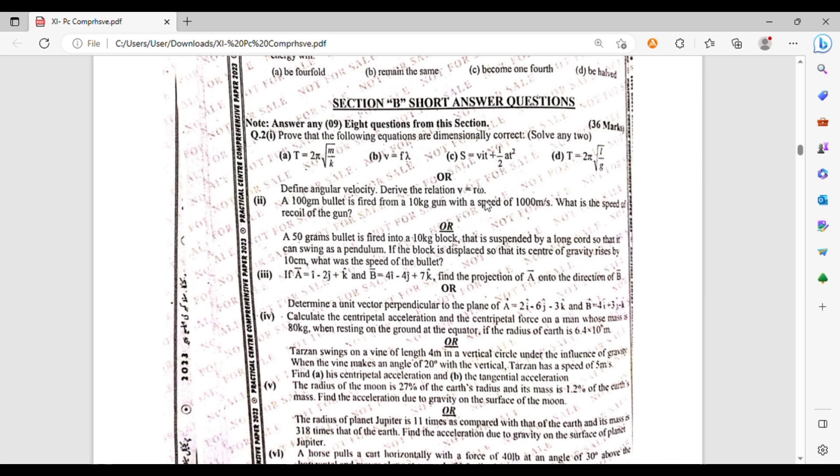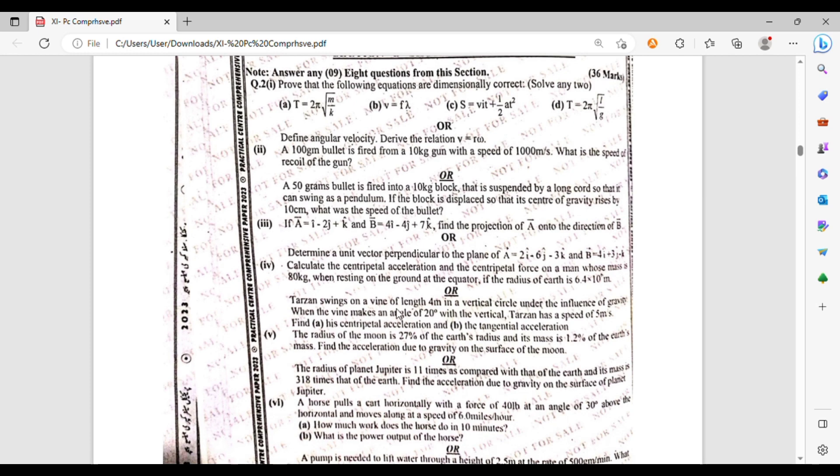A 100 gram bullet was fired from a 10 kilogram gun with a speed of 1,000 meter per second. What is the speed of recoil of the gun? A 50 gram bullet is fired into a 10 kg block that is suspended by a long cord so that it can swing as a pendulum. If the block is displaced so that its center of gravity rises by 10 cm, what is the speed of the bullet? If a is equals to i minus 2j plus k and b is equals to 4i minus 4j plus 7k, find the projection of a onto the direction of b. Or define and determine the unit vector perpendicular to the plane where a equals 2i minus 6j minus 3k and b equals 4i plus 3j minus k.